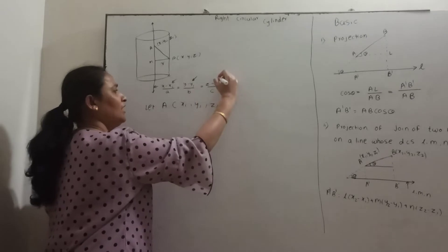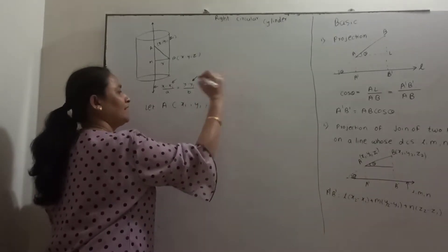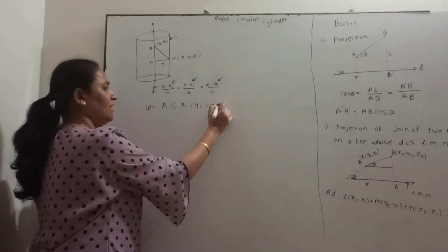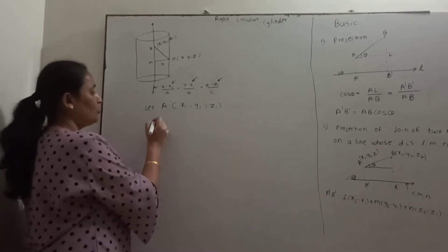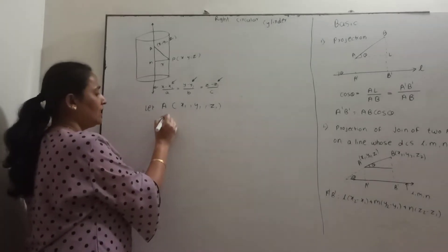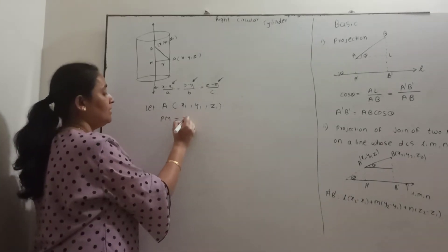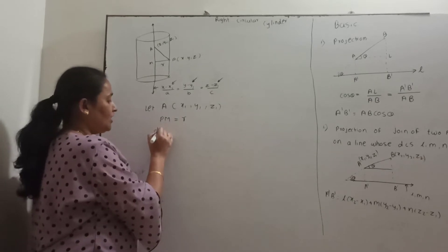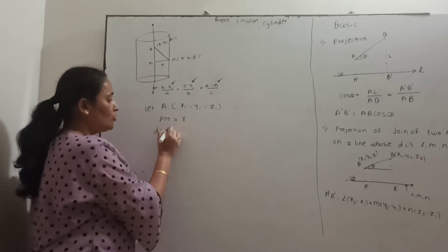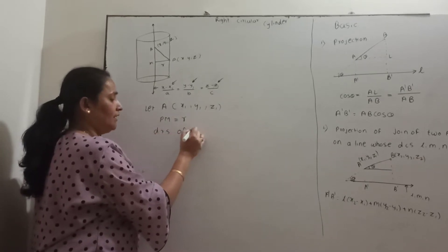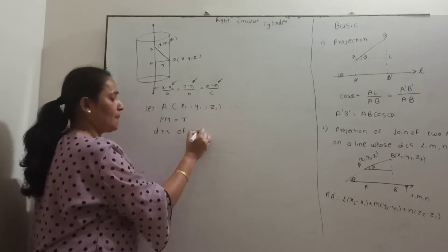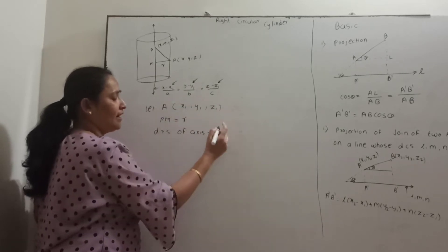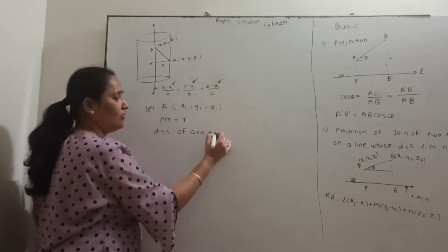So x₁, y₁, z₁ are coordinates of any point on the axis. Suppose the radius of the cylinder is R, so PM equals R. The direction ratios of the axis of the cylinder are whatever values appear in the denominator of the symmetrical form equation — that is, A, B, C.